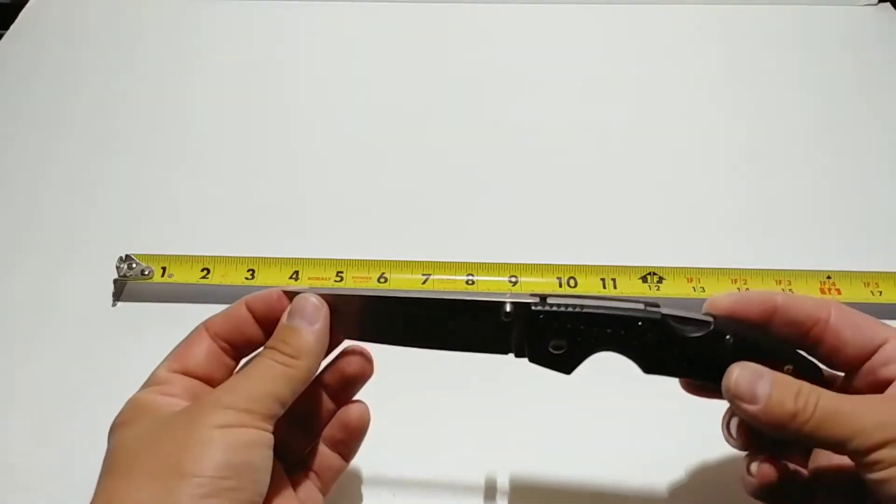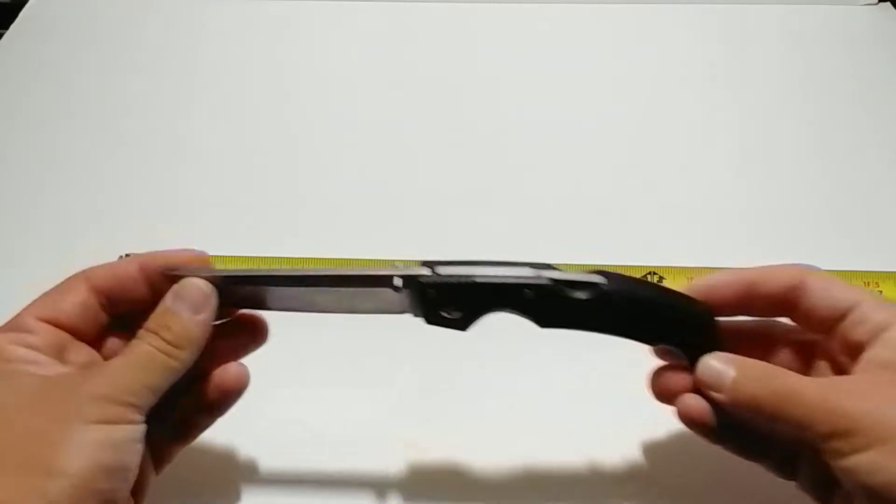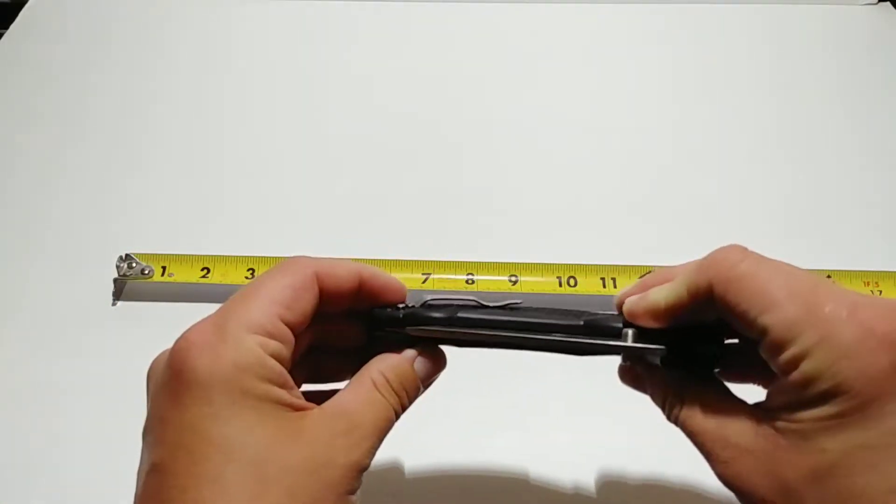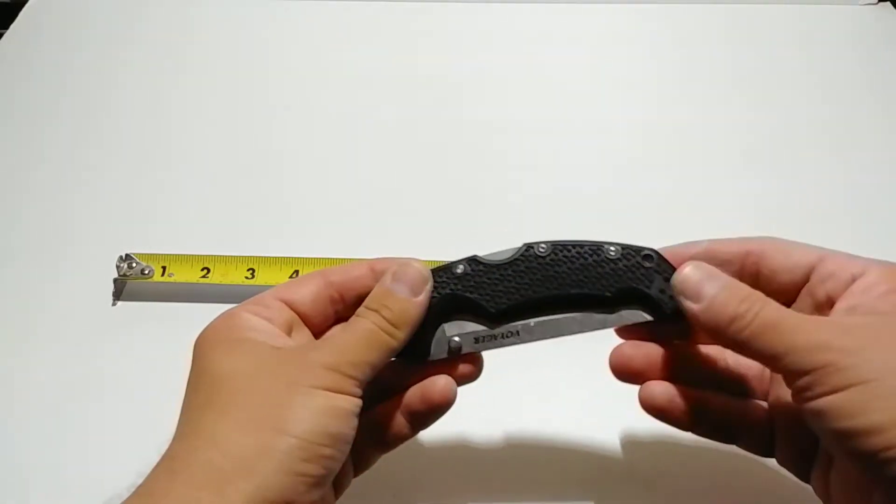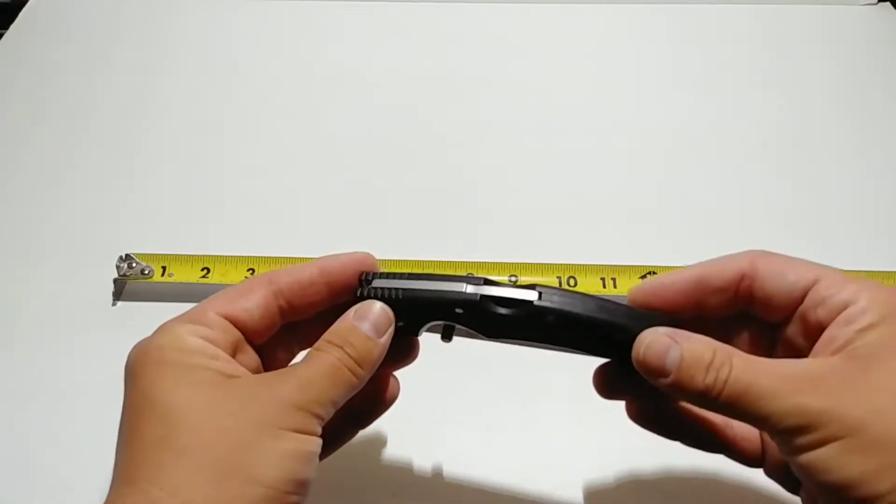Overall length is nine and a quarter inches. It's a large knife - you will know it's in your pocket, but it's not too cumbersome to prevent you from carrying it. I usually carry mine right up against the back side of my pocket so that when I bend over or stoop down, it rides pretty naturally.